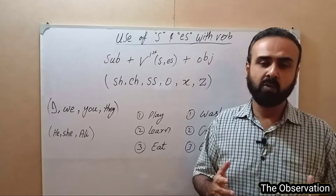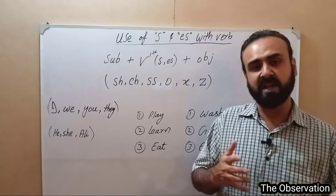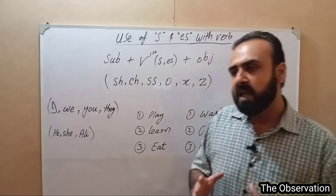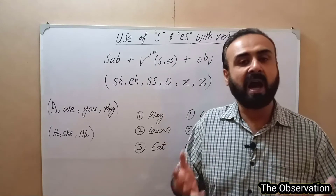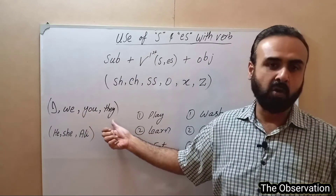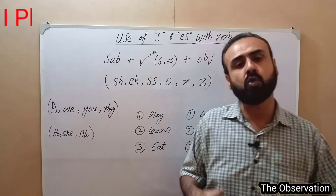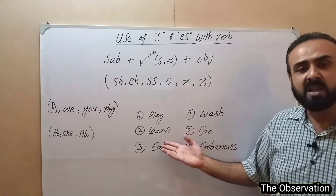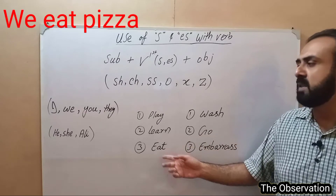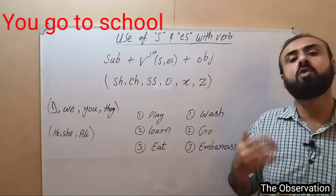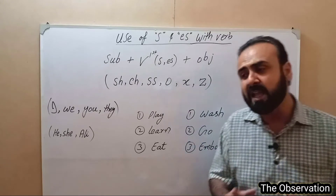I have already made a video on first, second, and third person — please watch that if your concept is not clear. When we make sentences with verbs, if the subject is I, we, you, or they, then S or ES is NOT added to the verb. For example: I play cricket, I learn English, we eat pizza, you go to school — the verb stays the same.